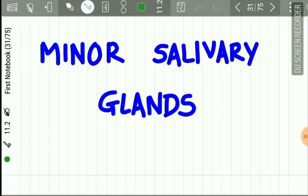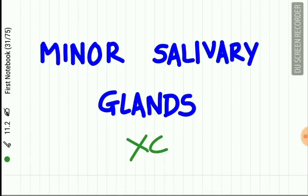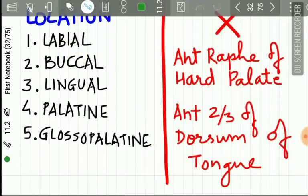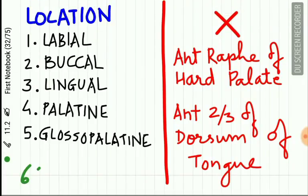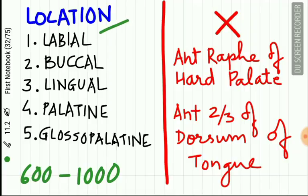The minor salivary glands are present beneath the epithelium in all parts of the mouth. They lack a connective tissue capsule. There are about 600 to 1000 minor salivary glands in the mouth. They are classified by location into labial glands, buccal glands, lingual glands, palatine glands, and glossopalatine glands.